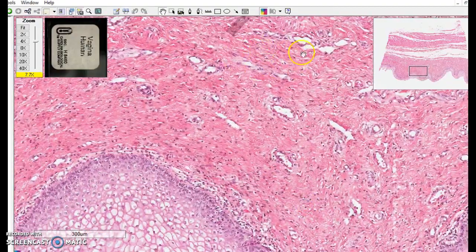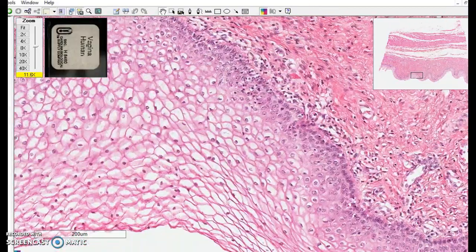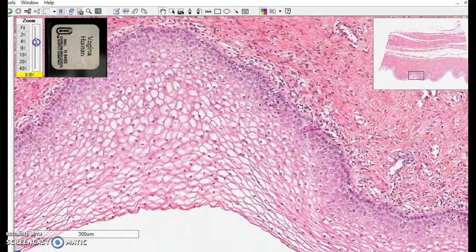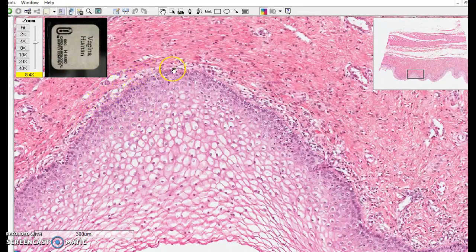This is dense irregular connective tissue, various connective tissues, but what we're interested in is these layers at the surface. So again, here's a basement membrane, a very sharp distinction between this tissue, this tissue, and that tissue.